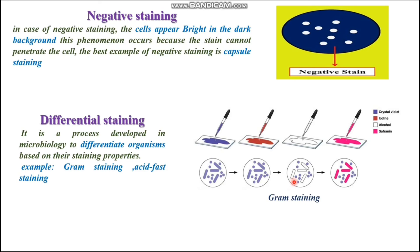To differentiate between gram-positive and gram-negative cells in a more enhanced way, we use a secondary stain called safranin. After using safranin, gram-negative bacteria are stained pink in color and gram-positive bacteria remain violet in color. This gram staining process clearly shows that it is used to differentiate two bacterial species present in the same bacterial smear.